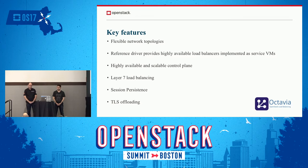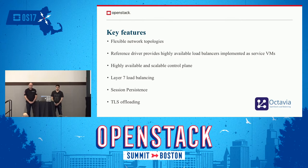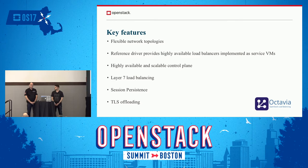Some key features of Octavia: we have flexible network topologies — we can plug into public networks, private networks, work with floating IPs, flat subnets, whatever you need. Our reference driver is highly available and uses VMs. We have a highly available and scalable control plane — it's shared-nothing so you can scale it as needed. We support Layer 7 load balancing, session persistence, and TLS offloading. For TLS offloading, we require the Barbican project to store certificates, as it's the secure secret store in OpenStack.